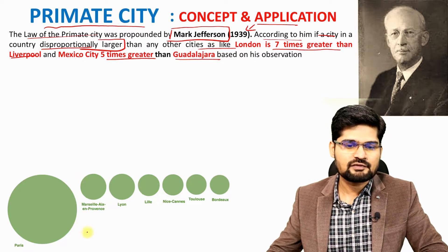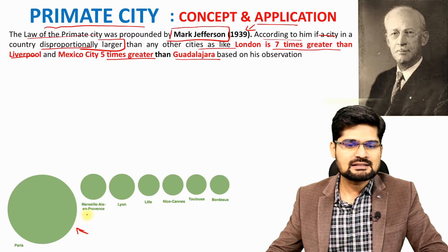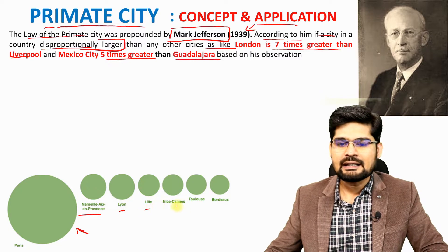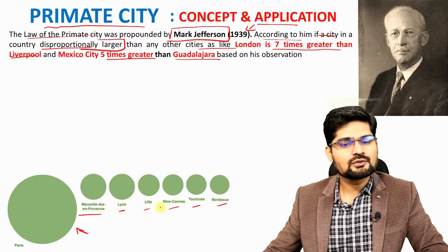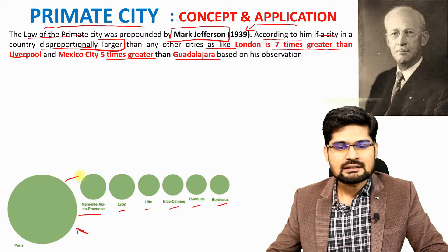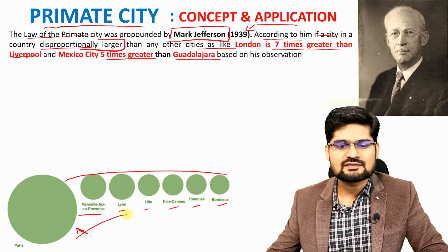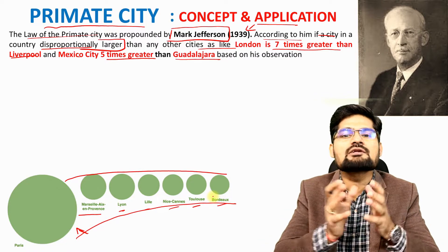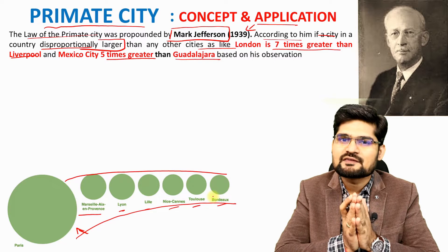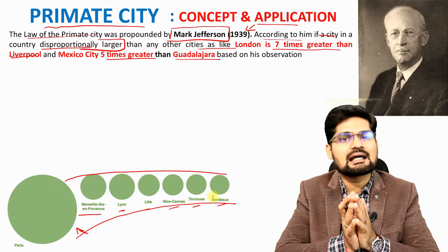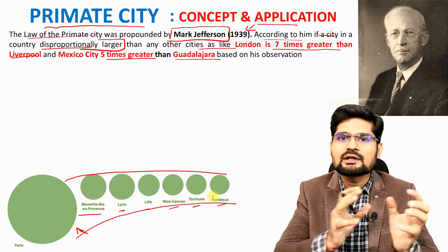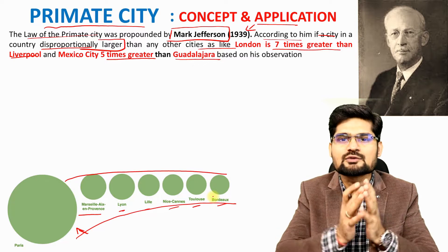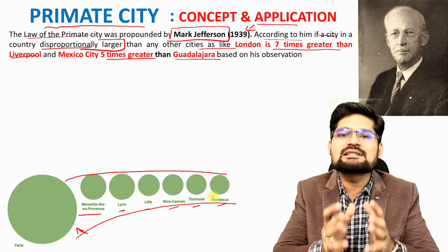If you look at France, you have Paris, then Marseille, Lyon, Lille, Cannes, Toulouse, and Bordeaux. Looking at the distribution of city sizes, you'll find a disproportionate relationship. We have also learned in previous lessons about the hierarchy of urban settlements, and we look into this hierarchical relationship through the rank-size rule and the primate city concept.